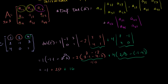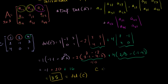We get 20 plus 16 minus 1, which equals 35. We're done — we found the determinant of our 3 by 3 matrix. That is the determinant of C. The fact that this isn't 0 tells you that C is invertible. In the next video, we'll try to extend this to n by n square matrices.